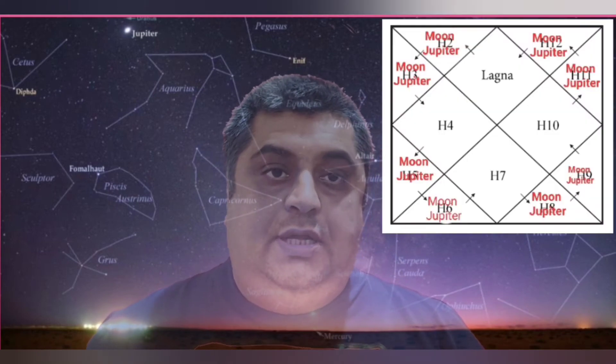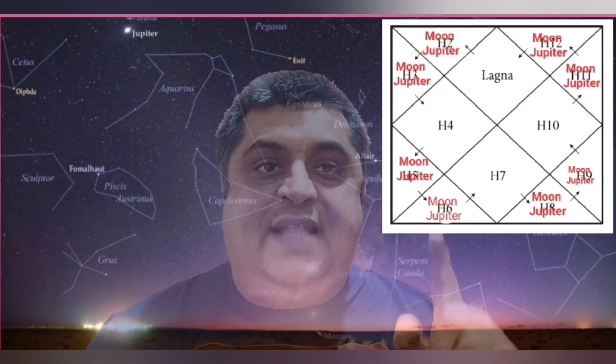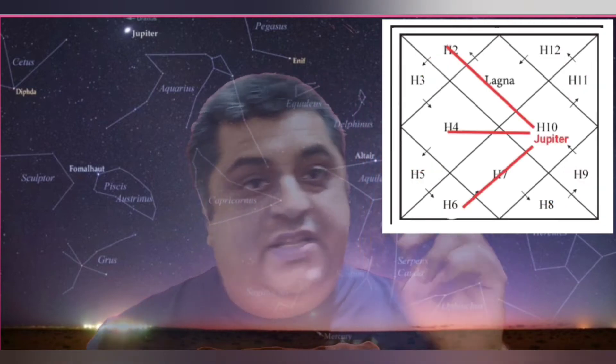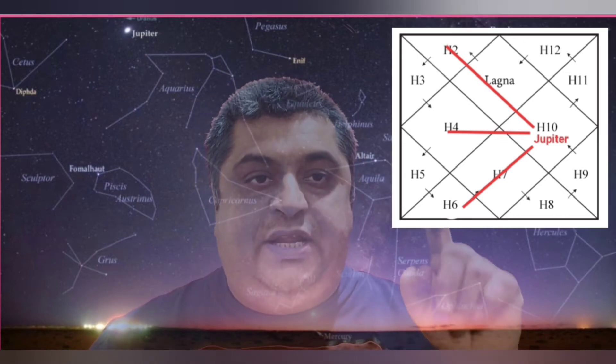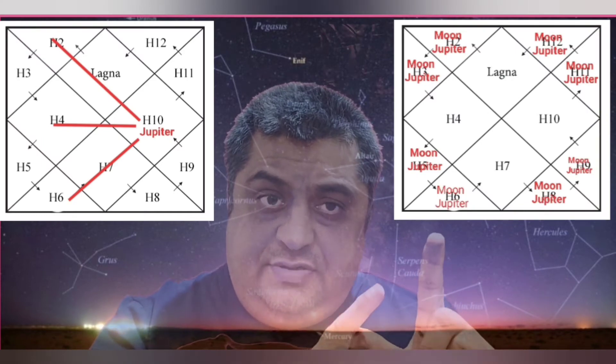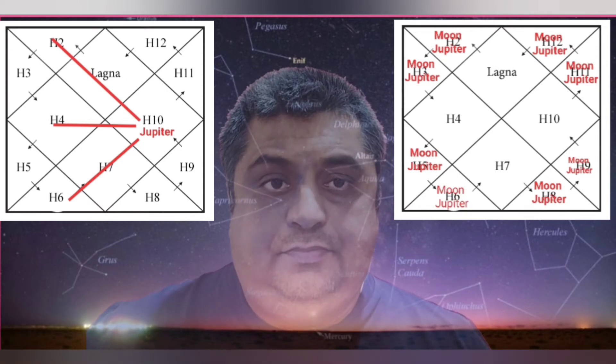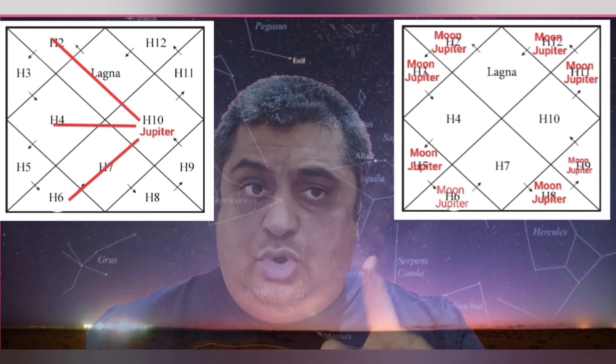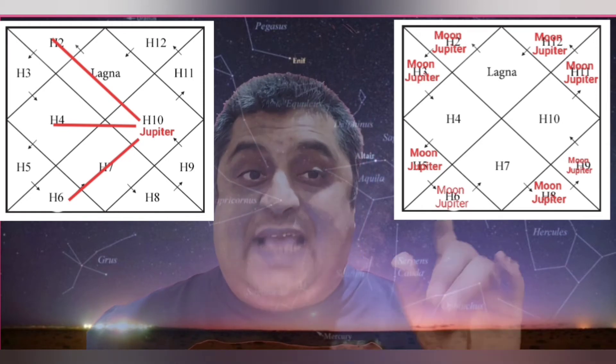The second rule to cancel this dosha: Jupiter must not be in conjunction, nor should it have an aspect on the Moon. Jupiter has the fifth aspect, the seventh aspect, and the ninth aspect. So Jupiter must not be aspecting the Moon. Moon must not be in conjunction with or aspected by Jupiter — this cancels the Kemadrum Dosha.